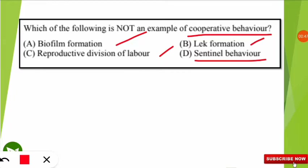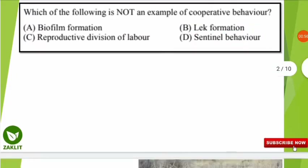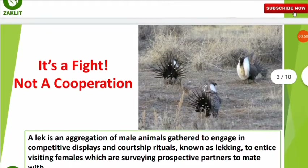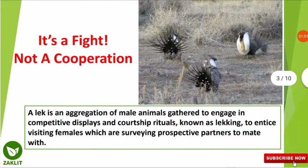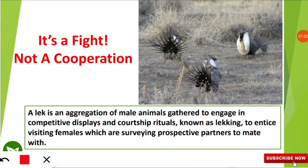The correct option — the one that is NOT an example of cooperative behavior — is option B: lek formation. We'll now go through each of these four types of behaviors one by one, as they are very important from the perspective of behavioral ecology. First, lek formation is not a type of cooperation; it is actually a type of fight.